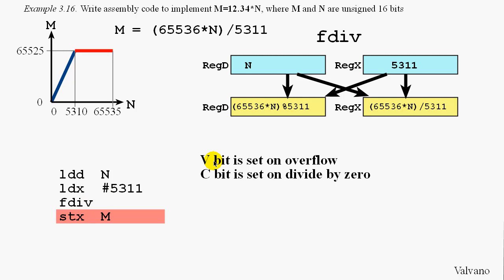The FDIV instruction sets two condition code bits on overflow. The V bit is set if the result is too large. That's this red portion of the curve. The C bit would have been set on a divide by 0. In this particular case, the divisor is fixed at 5311. And therefore, we can't have a divide by 0 in this problem.